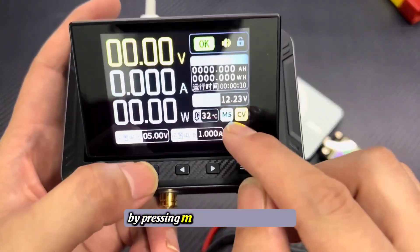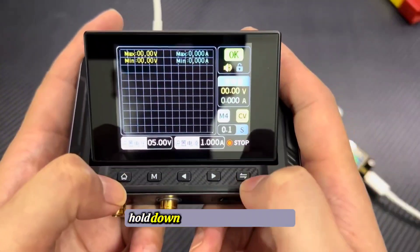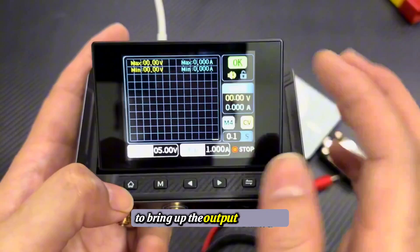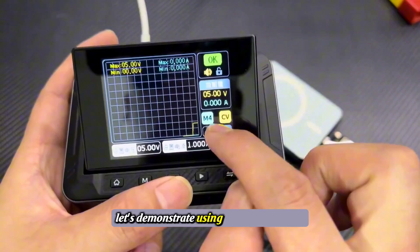By pressing M on the main interface, you can quickly switch between six shortcut groups. Hold down the confirmation button to bring up the output waveform display, which shows the current output.